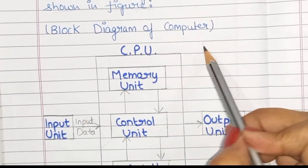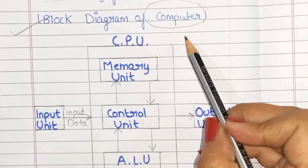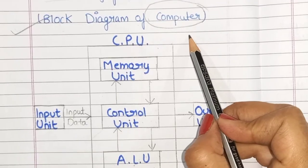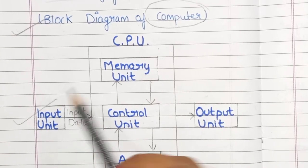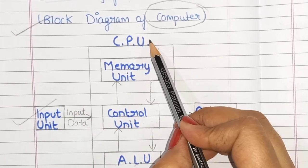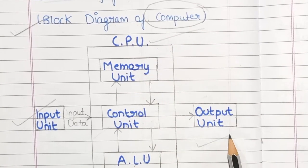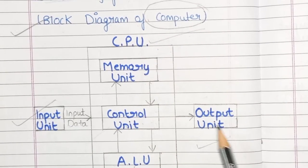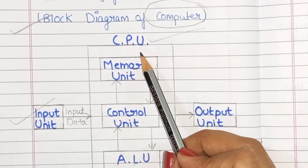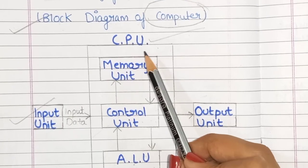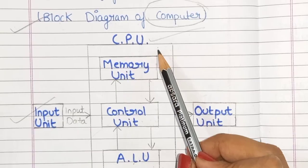This block diagram represents a computer. A computer has three essential units: first is the input unit, second is the central processing unit, and third is the output unit. The CPU is the brain of a computer, and its main function is to execute programs.